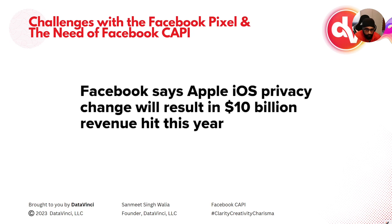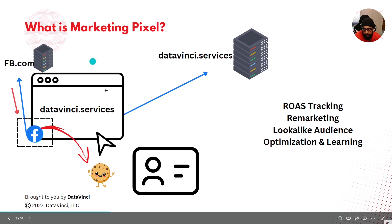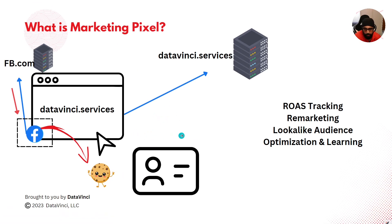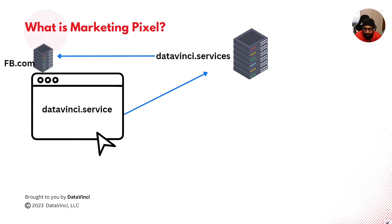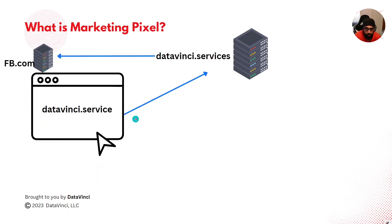Just a quick recap: you have a pixel on the website, the pixel sends data to the marketing server, the server responds back with an identification, and a cookie is created storing this identifier. Now, instead of the marketing pixel sending data to the ad platform directly, what if you send the data to your own server — the website server — and then from that server you directly send the data to Facebook or any marketing platform?